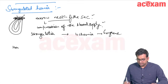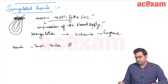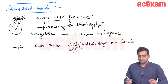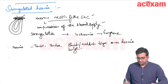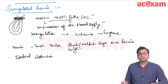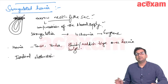Strangulation occurs when a narrow neck of the sac compresses the blood supply to the contents, leading to strangulation, ischemia, and gangrene. The patient presents with nausea, vomiting, abdominal distension, bilious vomiting, and inability to pass flatus and feces.